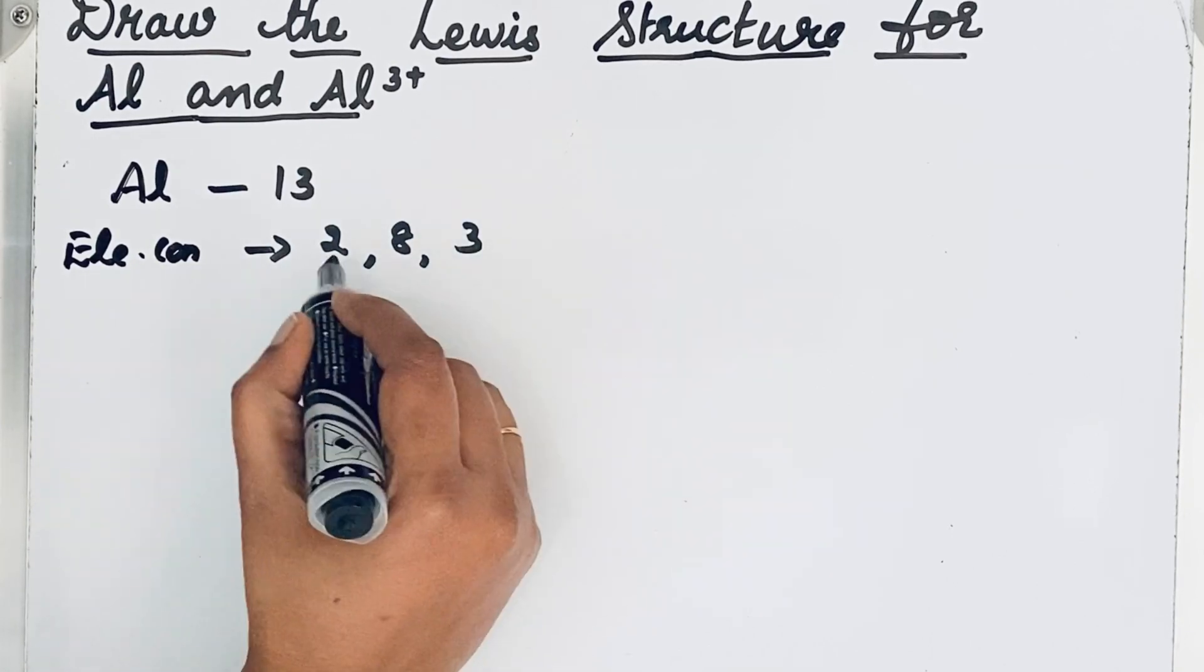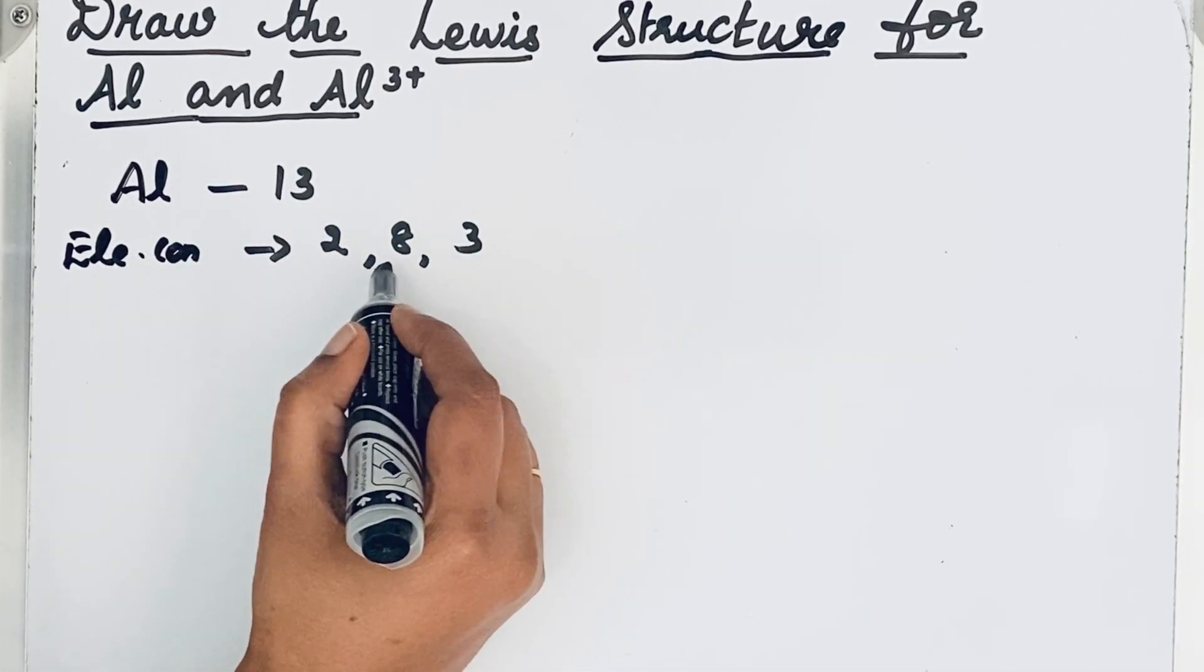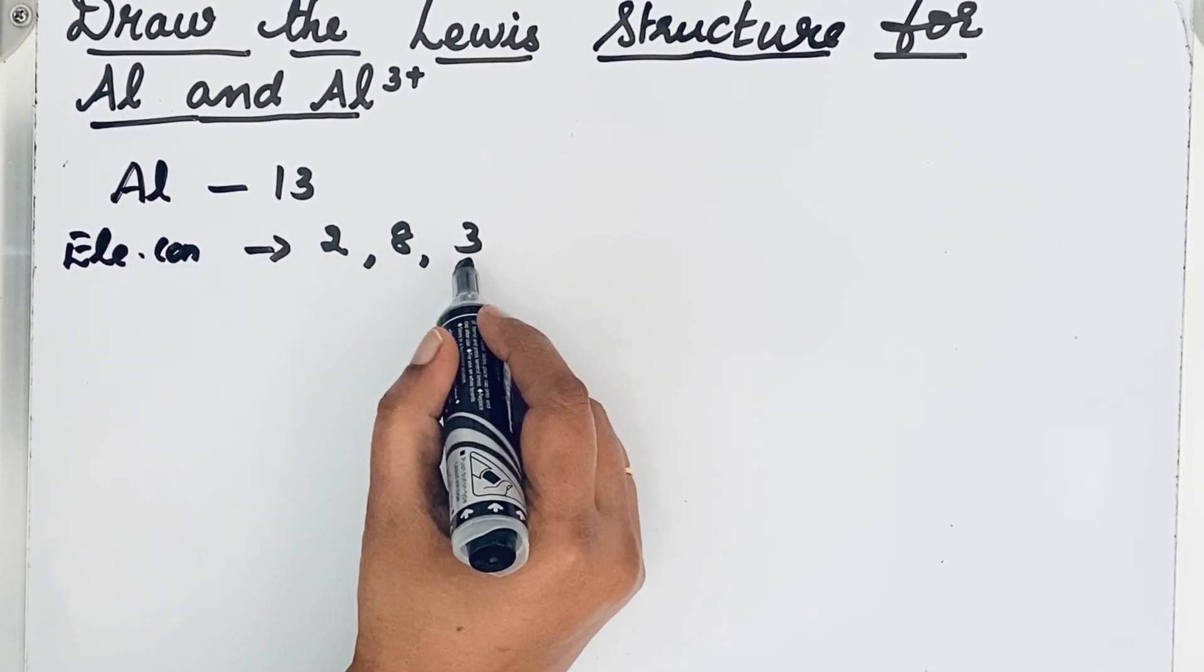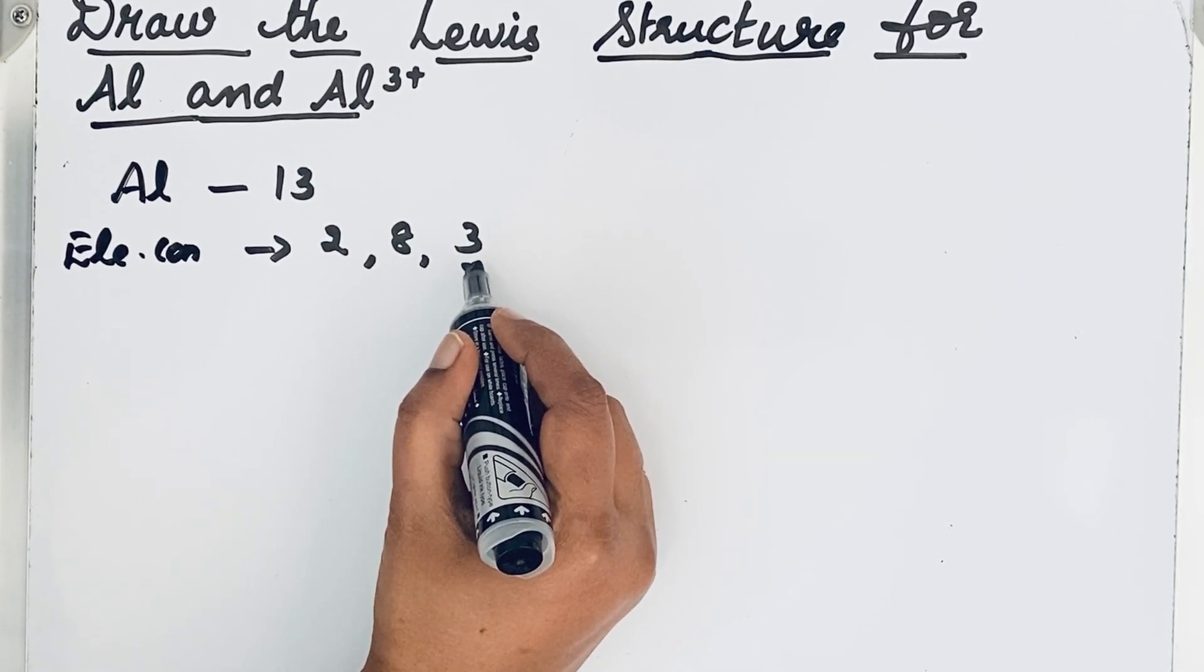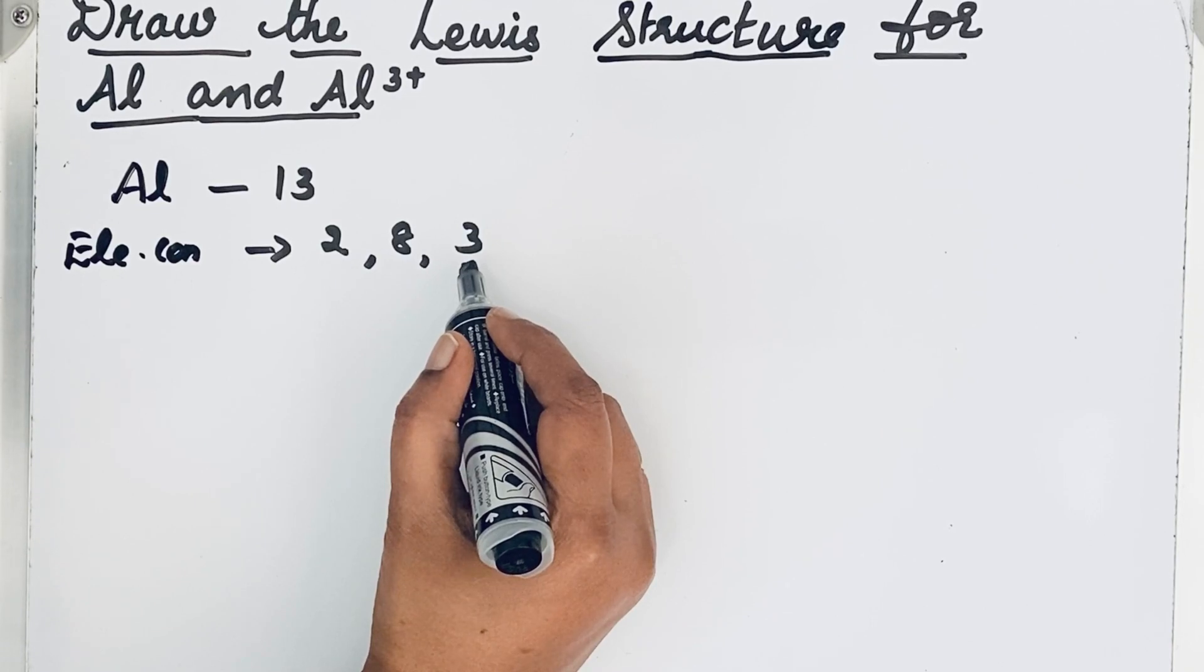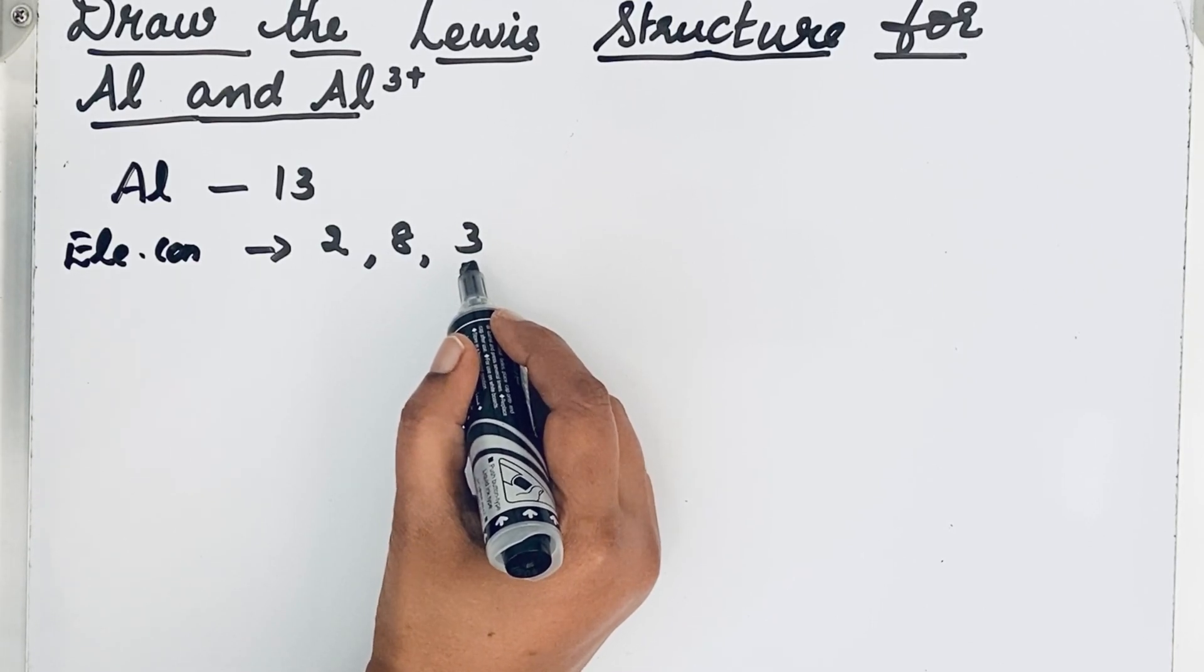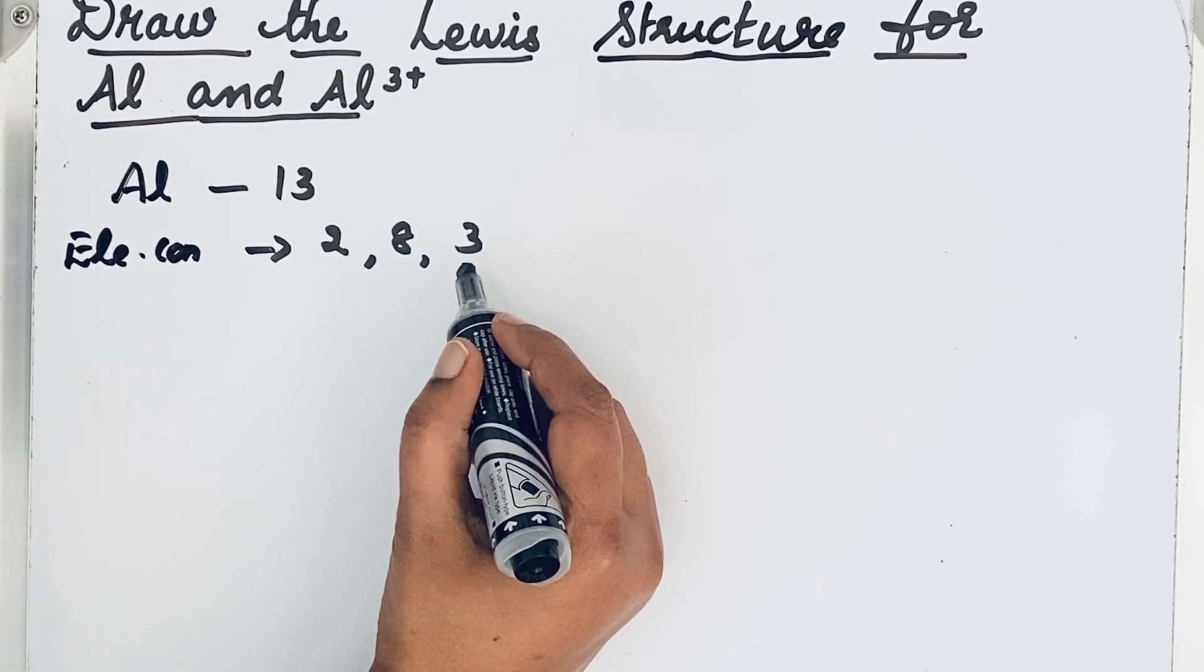So total 13 electrons. This 3 is what we call the valence electrons - the electrons which are present in the outer shell. In Lewis structure, we will show only those valence electrons.